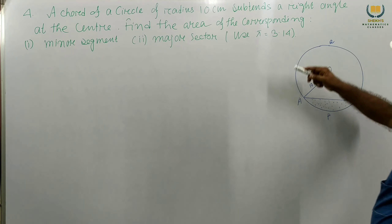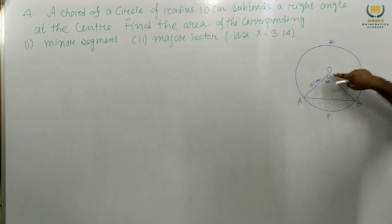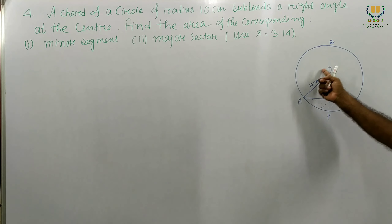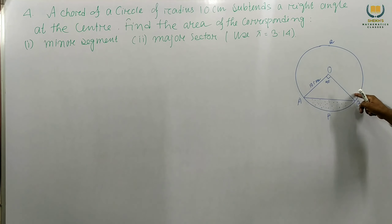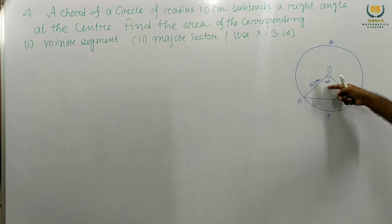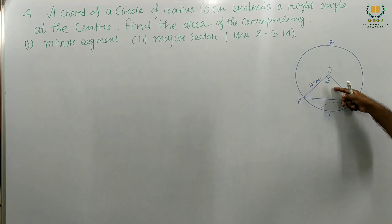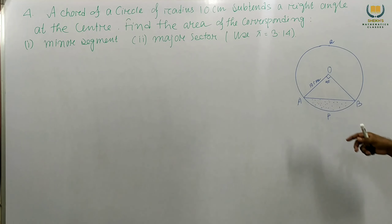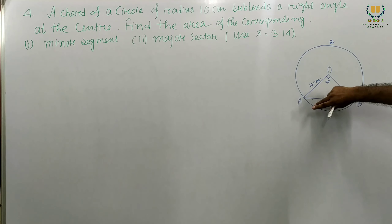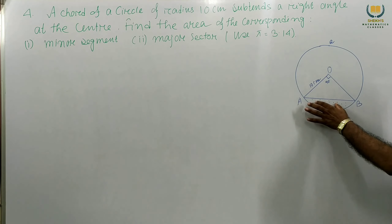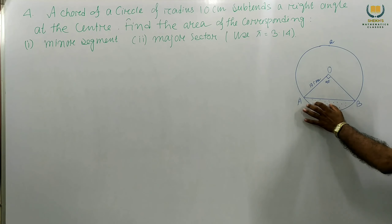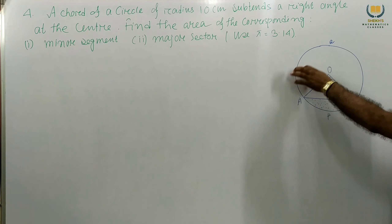We consider this is the circle and O is the center. The radii OA and OB are 10 centimeters. The sector angle given is 90 degrees, a right angle at the center. We have to find the minor segment — this portion — and the major sector area.